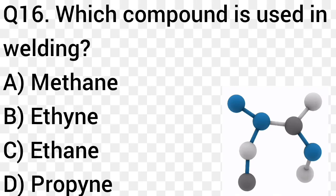Question number 16. Which compound is used in welding? Option A: Methyne. Option B: Ethyne. Option C: Ethyne. Option D: Propyne. The right answer is option B, Ethyne.